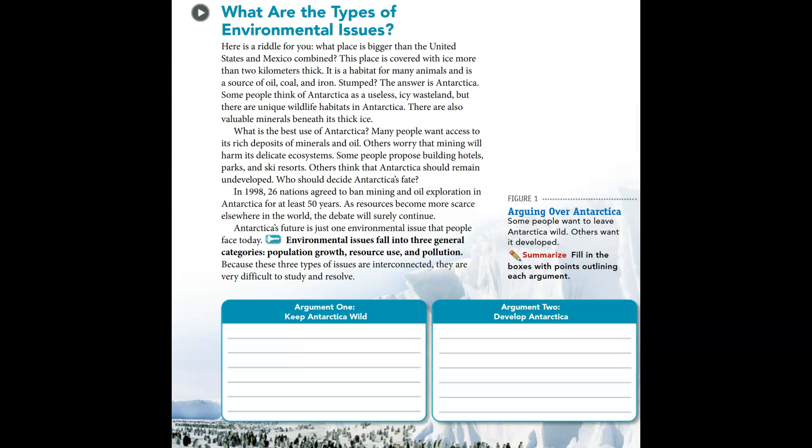What are the types of environmental issues? Here's a riddle: what place is bigger than the United States and Mexico combined, covered with ice more than two kilometers thick, a habitat for many animals, and a source of oil, coal, and iron? The answer is Antarctica. Some people think of Antarctica as a useless icy wasteland, but there are unique wildlife habitats there and also valuable minerals beneath its thick ice.